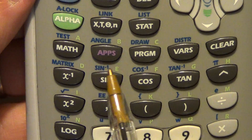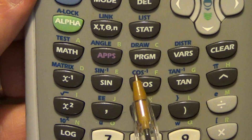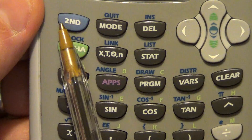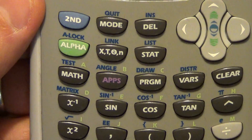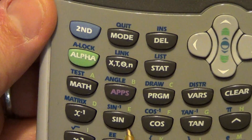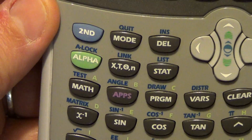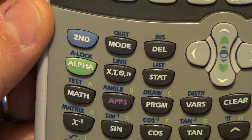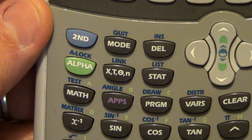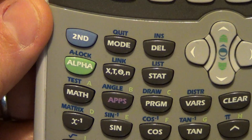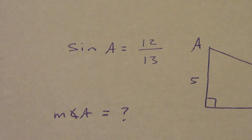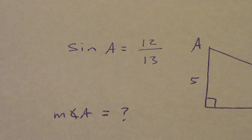That little negative 1 matches the color of the second button, which is the button we're going to use. That little negative 1 is not a power or an exponent — it's not like 3 to the negative 1. This is what we call inverse sine, inverse cosine, or inverse tangent. An inverse operation is an operation that cancels something else out. We do this all the time in algebra: addition cancels subtraction, so addition and subtraction are inverse operations.